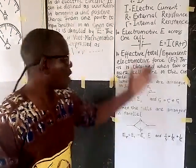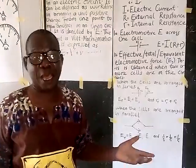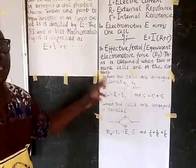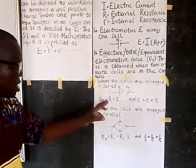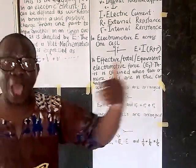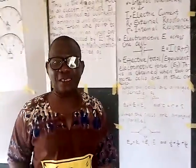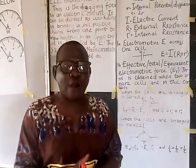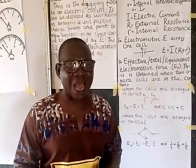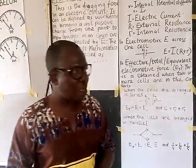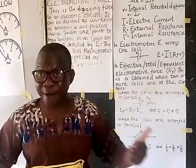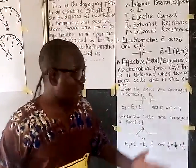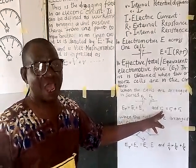In series arrangement, to find effective EMF you simply add them together: ET = E1 + E2 (and so on for more cells). The internal resistance of each cell is also affected. The effective internal resistance in series is also found by adding: RT = R1 + R2, just as you add the EMF values.